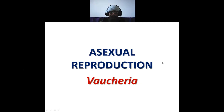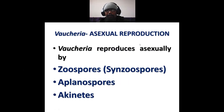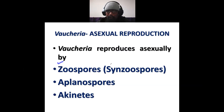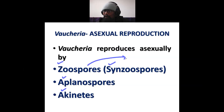Good morning. This lecture is on asexual reproduction in Vaucheria. Vaucheria reproduces asexually by formation of three different types of propagules: number one is zoospores, which are also called synzoospores or compound zoospores; second one is aplanospores; and third one is akinetes. First of all, zoospores — these are very large, massive, multi-nucleate and multi-flagellated structures.